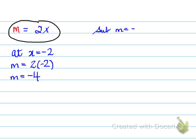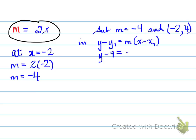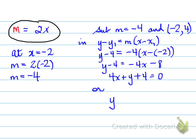Now we have the slope; we need to substitute the slope and a point. The point: x = −2, and y = f(−2) = (−2)² = 4, so the point is (−2, 4). Using point-slope form: y − y₁ = m(x − x₁), we get y − 4 = −4(x − (−2)). Note the two negatives make a plus, so x − (−2) becomes x + 2. Expanding: −4(x + 2) = −4x − 8.